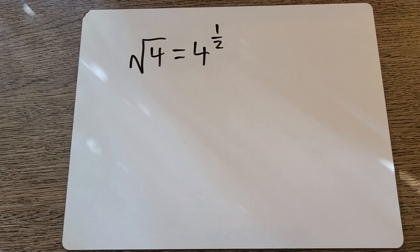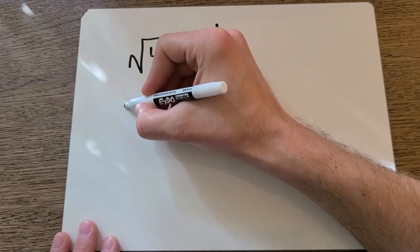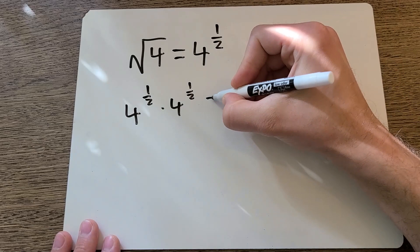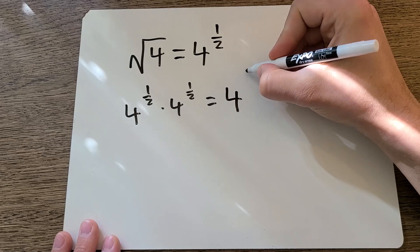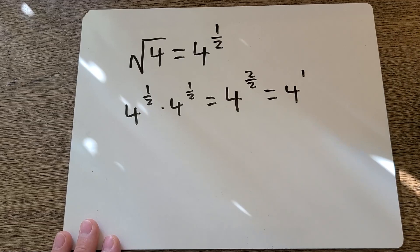For instance, this one, he would explain that 4 to the power of one half times 4 to the power of one half would equal... Now remember, when you multiply two exponents, you just add them up in the exponent place. So you would get 4 to the 2 over 2, which equals 4 to the 1, which equals 4.